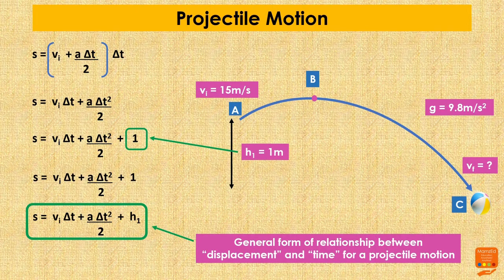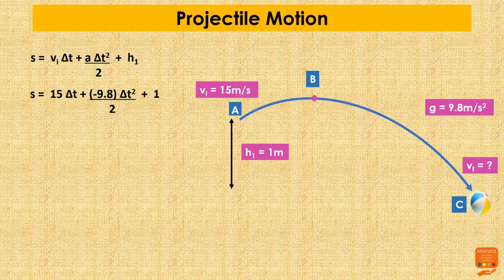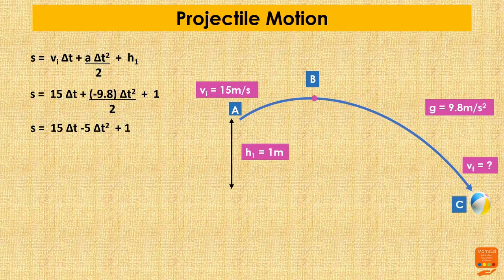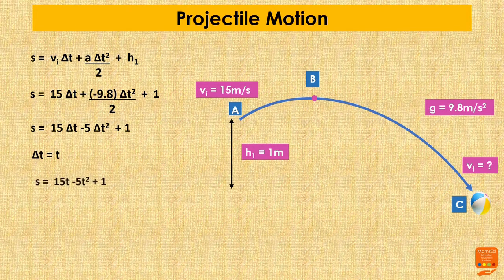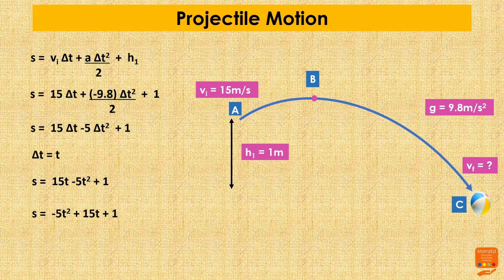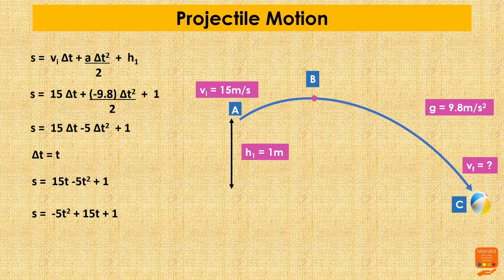Now we substitute the values: initial velocity = 15 m/s, acceleration = -9.8 m/s², and H1 = 1 meter. S becomes 15Δt + (-9.8 × Δt²)/2 + 1, which simplifies to 15Δt - 5Δt² + 1, where 5 comes from dividing 9.8 by 2 and rounding. Replacing Δt with t and rearranging, the equation becomes: S = -5t² + 15t + 1.